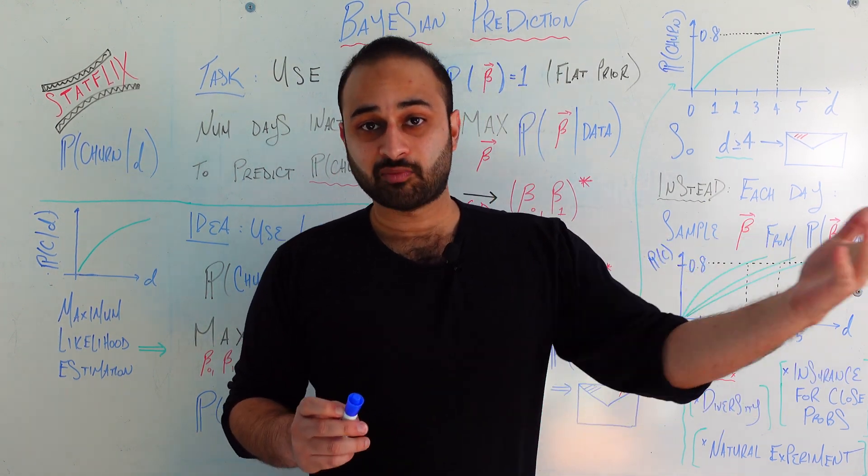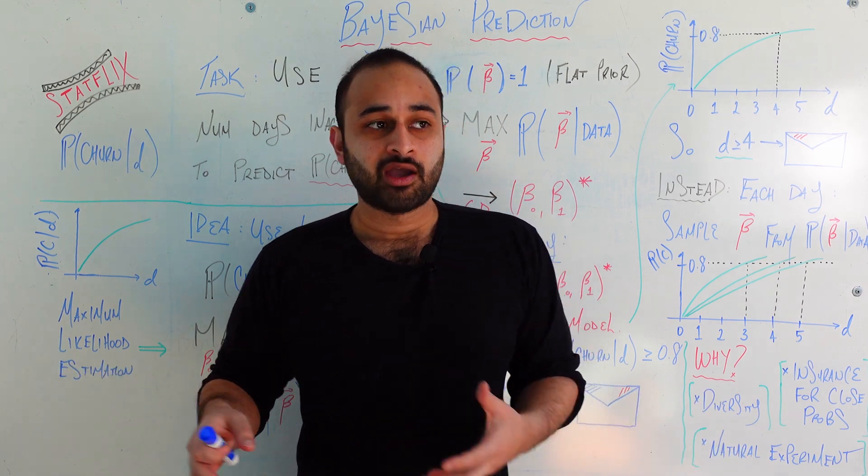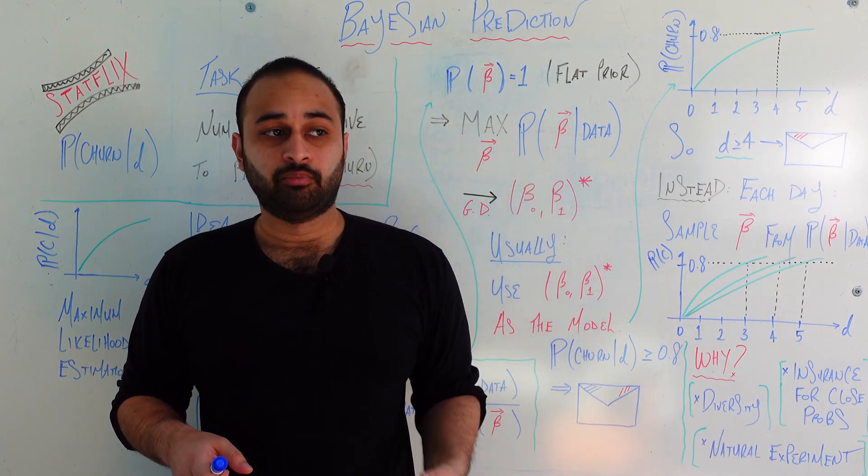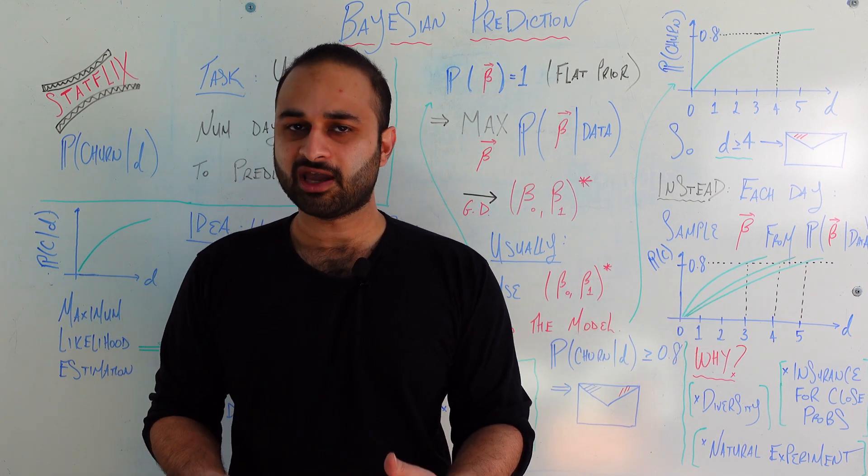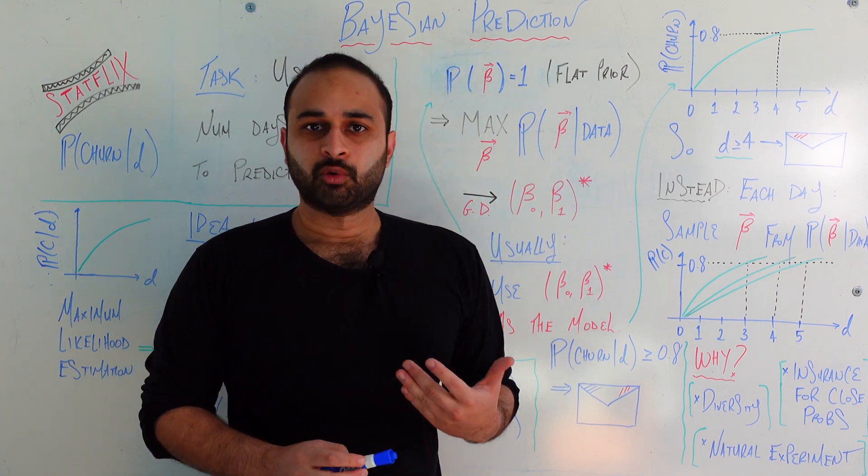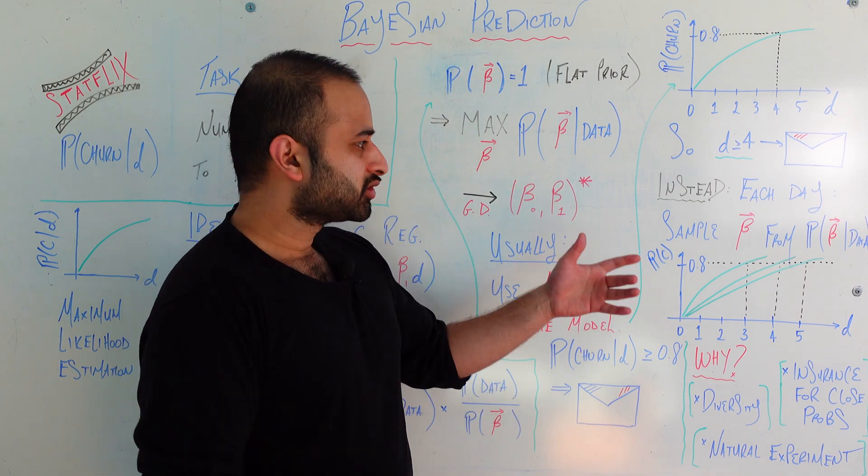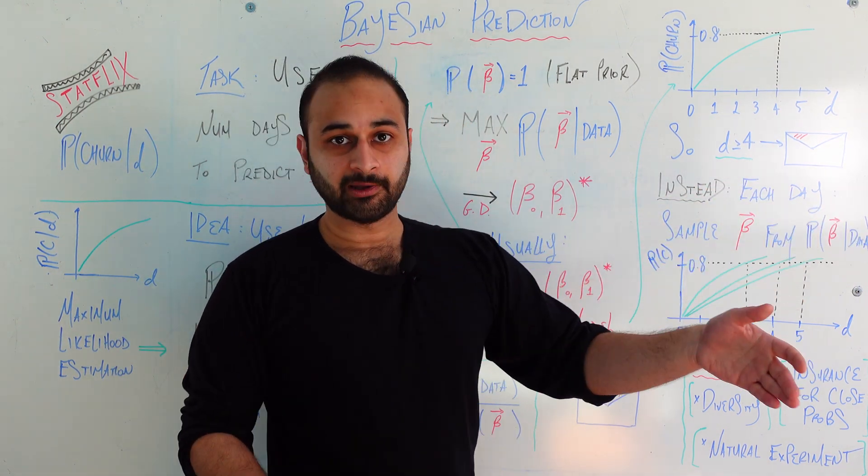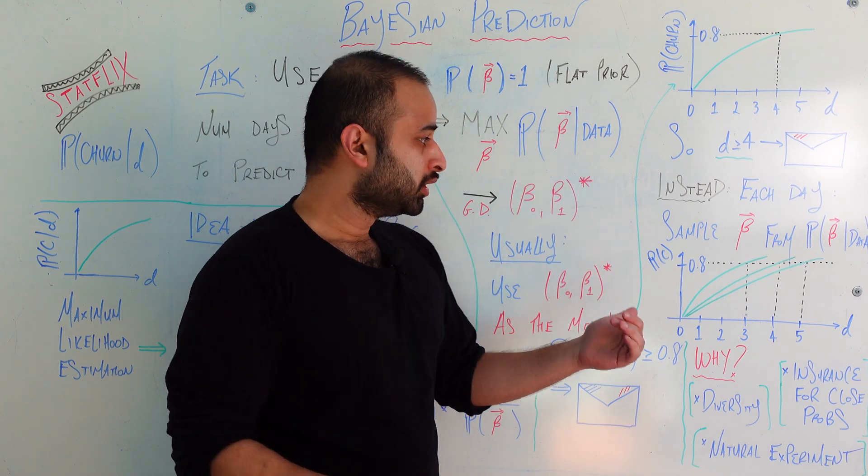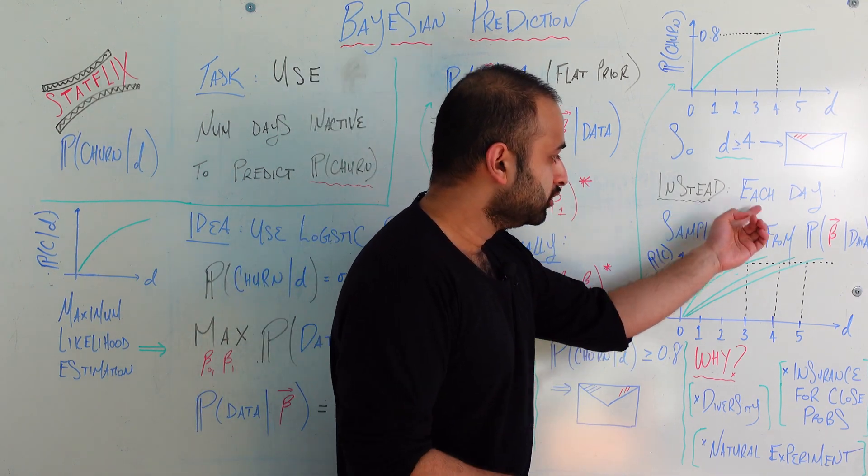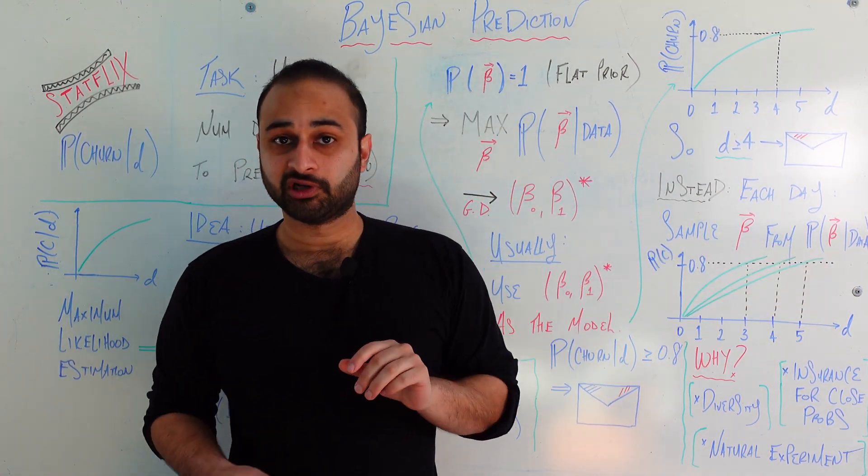Bayesian thinking says that there is not really a right answer. Maybe there is something which maximizes a function, but there are many other possibilities which get close to maximizing that function. And perhaps we should sample the model based on or proportional to those probabilities. And so let me make it more concrete what I'm trying to say as we talk about the instead way, the way we can do this prediction process in a more Bayesian way.